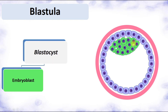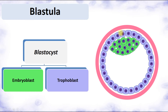The blastocyst has two parts: the embryoblast (inner cell mass) and the trophoblast (outer cell mass). Only the embryoblast will form the embryo itself. The trophoblast forms the wall of the blastocyst. 'Trophos' means nutrition — the trophoblast provides feeding for the embryo. It will form the chorion and later the placenta, which provides nutrition, while embryoblast cells form the different parts of the embryo.